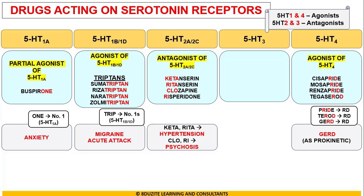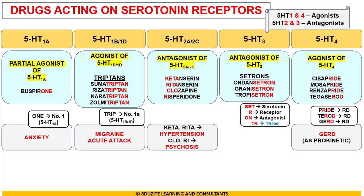Coming to the most important group — 5-HT3 receptors — we have all antagonists. These drugs are all setrons: Ondansetron, Granisetron, and Tropisetron. This is very easy to remember: 'SET' stands for serotonin, 'R' stands for receptor, 'ON' stands for antagonist, and the middle letters 'TR' stand for 3.